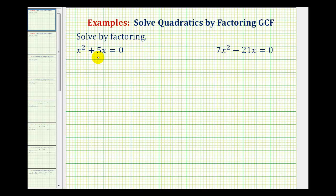So if we have x squared plus 5x equals zero, the first step should be to see if we have any common factors between x squared and 5x, and we do.